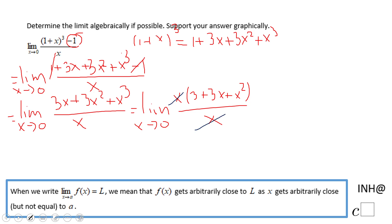And now we can use the substitution method. We can replace x with 0 and we're going to get 3 + 3 times 0 + 0² and that will be nothing else than 3. This limit here is 3 using this algebraic method.